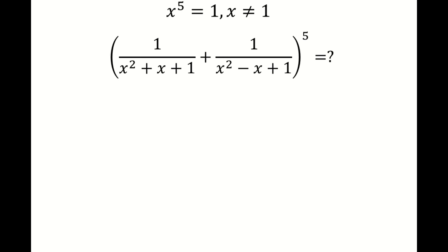Hello everyone, welcome to the SQRT channel. In this video we are going to talk about a problem involving evaluating an expression. We have x to the power of 5 defined as 1, and we know that x is not 1. We are going to evaluate the expression: the sum of 1 over (x² + x + 1) plus 1 over (x² − x + 1), all raised to the power of 5.